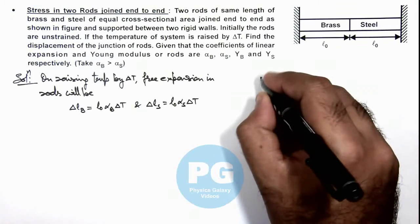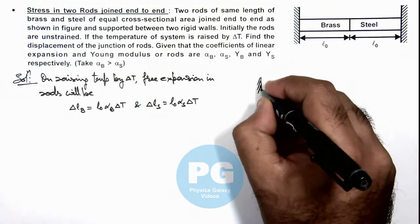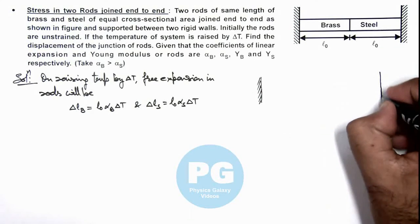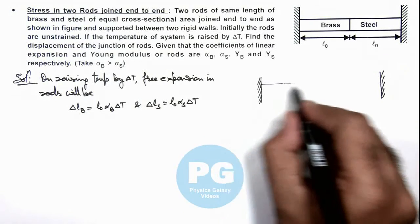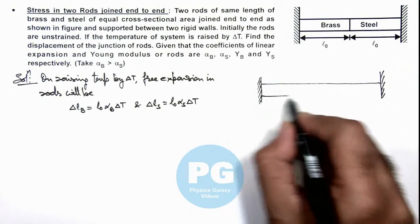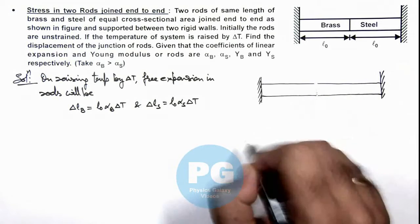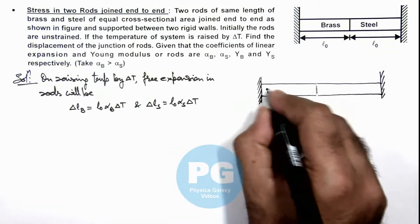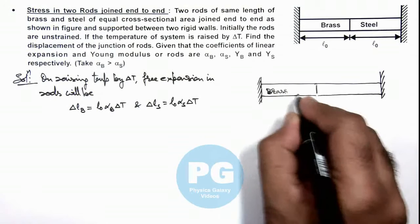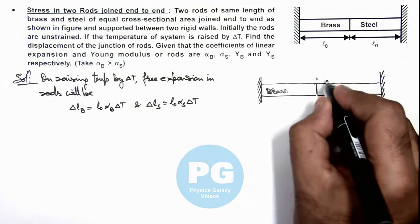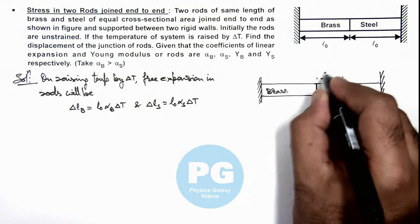Here we can redraw the figure to understand it better. These are the two walls between which the rods are placed. If we talk about brass and if it is independent, this brass will expand toward right by a distance ΔLB.